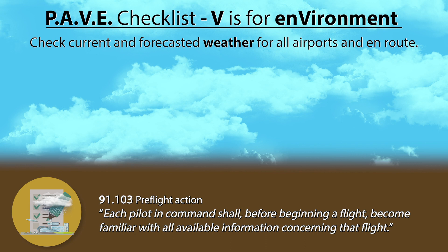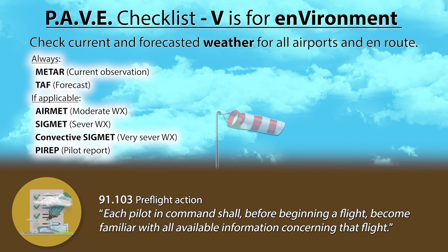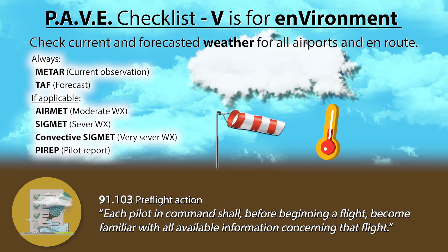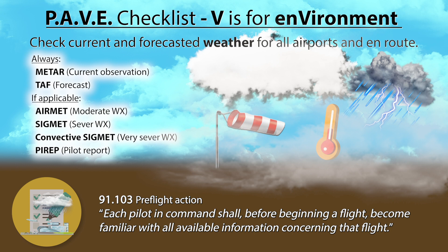Items to check on include METARs, TAFs, and if applicable, airmets, sigmets, convective sigmets, and PIREPs. Those will give you information such as wind velocity, temperature, sky coverage, visibility, and possible adverse meteorological conditions.